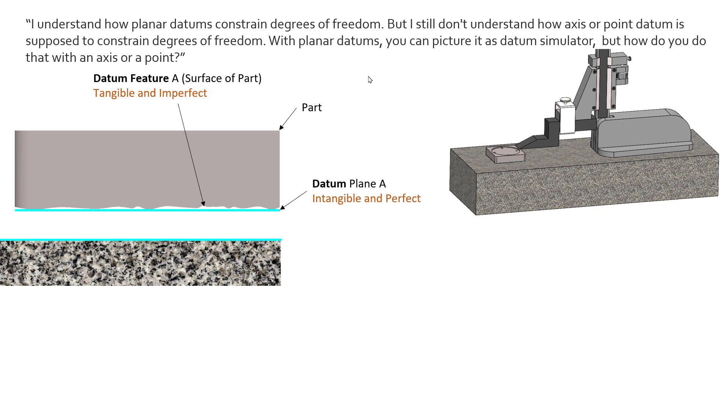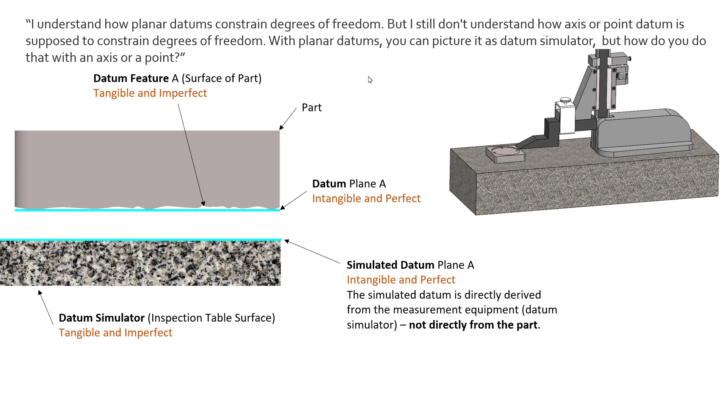Now that feature needs to create a datum, and the datum is theoretical—it's intangible and it's a perfect flat plane. So how do we create something that's perfectly flat and planar off of something that's not perfectly flat and is tangible? Well, we introduce something we call a datum simulator. The datum simulator in this case is going to be a granite table. For those of us in the inspection industry, we know these granite tables or surface plates are very flat. In fact, they can be checked and made sure that they stay flat.